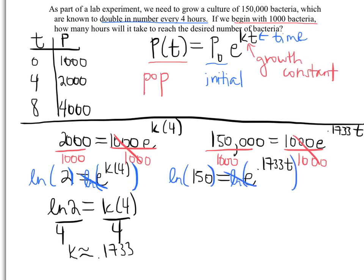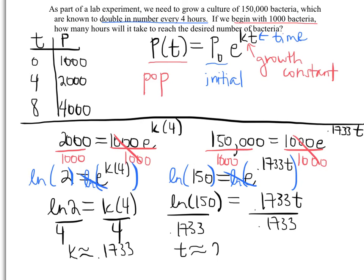So those will cancel. We'll end up with natural log of 150 is going to equal 0.1733 t. Divide both sides by 0.1733 to get the t by itself. Crunch that in the calculator and we get about 29 hours.